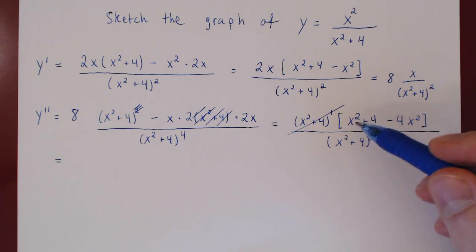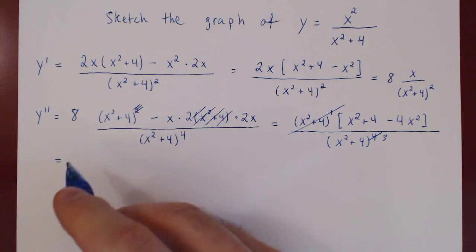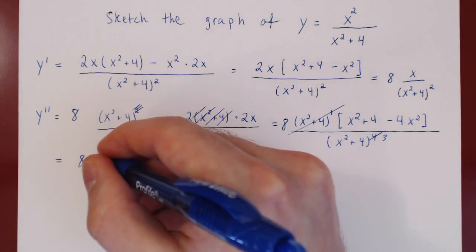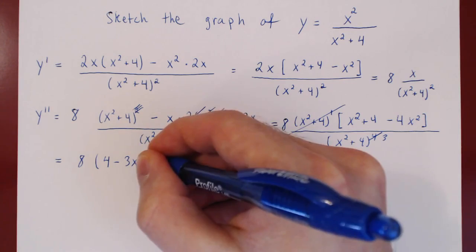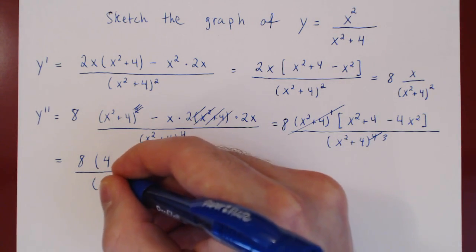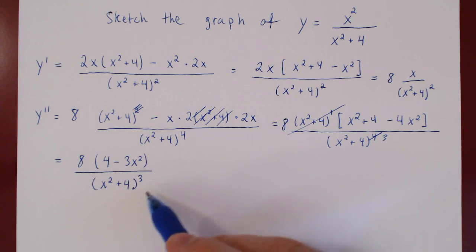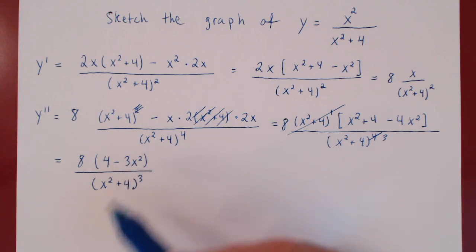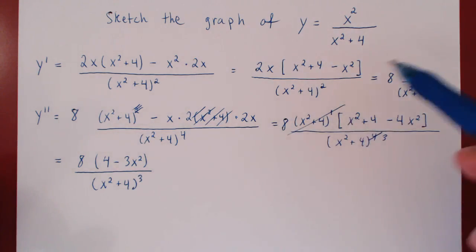On top, we're left with 4 minus 3x squared. I forgot my 8 — the 8 stays up front. So we have 8 times 4 minus 3x squared over x squared plus 4, all cubed. So we now have our second derivative factored and simplified. We have a quadratic here, which we'll factor to find the zeros when we look for inflection points. We now have our first and second derivatives simplified, so we're good to go.